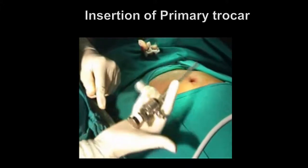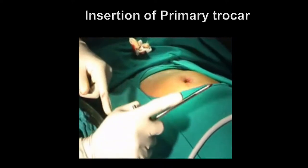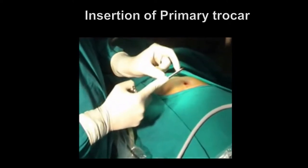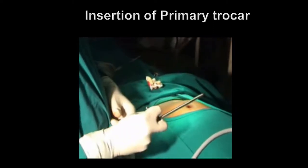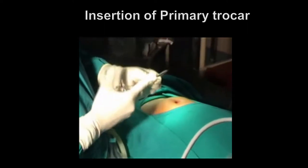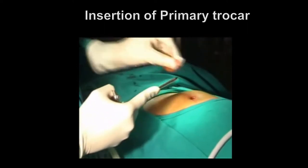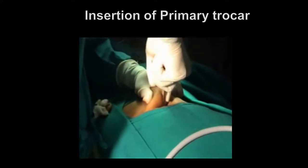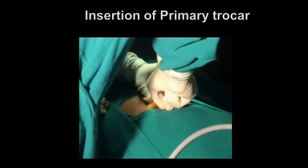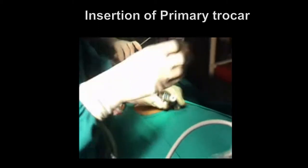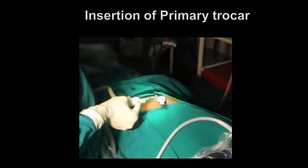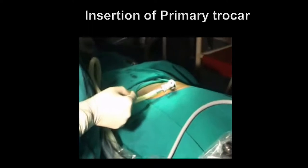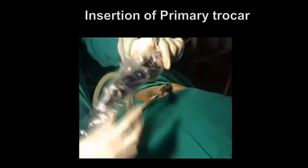For insertion of the primary trocar, we should know how to hold the trocar properly — with the sharp part projecting only 2 to 3 cm — and use our index finger as a guide. We should use a gentle twisting movement, with thrust from the wrist rather than undue shoulder force. Once it enters, push the flap valve to check whether it is in the peritoneal cavity, then attach the telescope to confirm entry before opening the tap to let CO2 in.